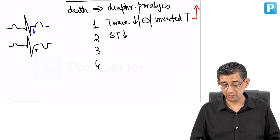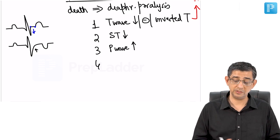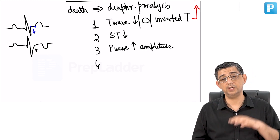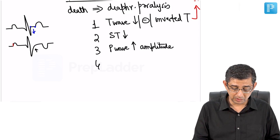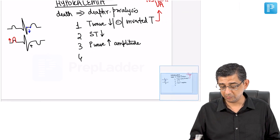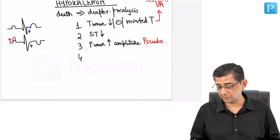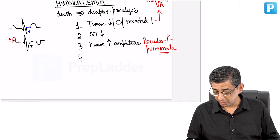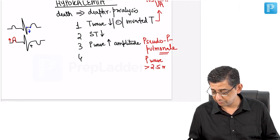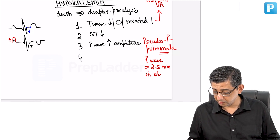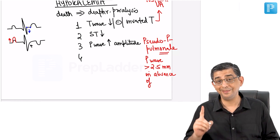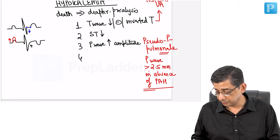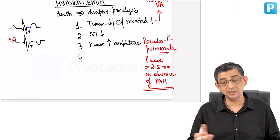As potassium values fall further, the P wave amplitude will rise — the reverse of hyperkalemia, where P wave was disappearing. This increase in P wave height leads to a phenomenon called pseudo P pulmonale, which has appeared in NEET exams. Pseudo P pulmonale means the P wave height is more than 2.5 millimeters in the absence of pulmonary artery hypertension — traditionally a tall P wave is associated with pulmonary hypertension, but here it occurs without that etiology.